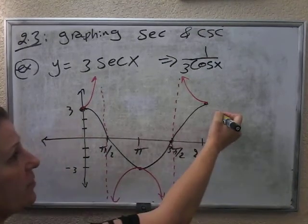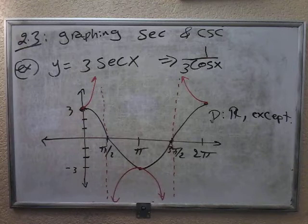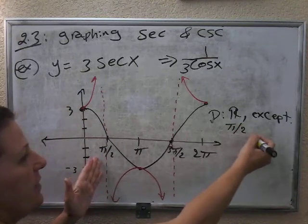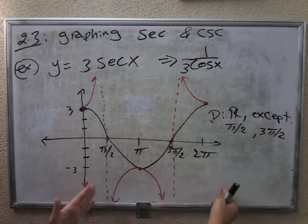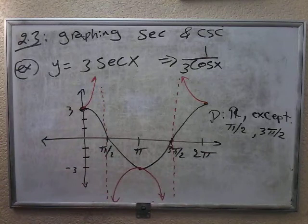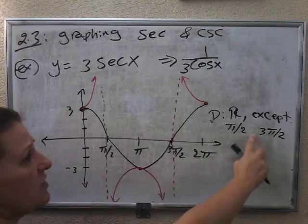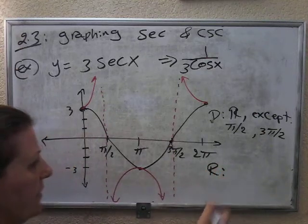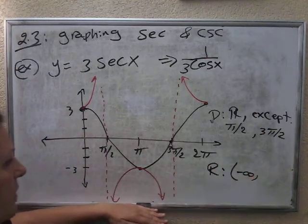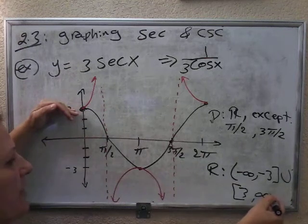The domain is not changing — all real except x not equal to pi over 2 and 3 pi over 2 in our situation, or more generally pi over 2 plus k pi. For the range: negative infinity to negative 3, union, 3 to positive infinity — because the amplitude is 3.